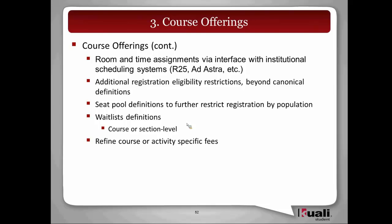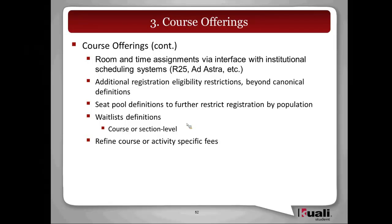At the course offering, we're planning a very sophisticated wait list ability that will be delivered in various complexities at different release levels of enrollment. Wait lists will be able to be handled either at the course level or the section or activity level. In addition, in the course offerings, departments will be able to refine course or activity-specific fees. Some of this is done at the curricular level in the canonical course, but at the offering level, institutions will be able to add additional fees or remove fees as appropriate.